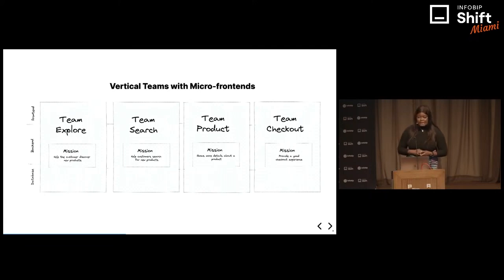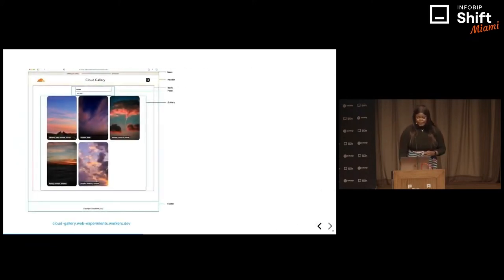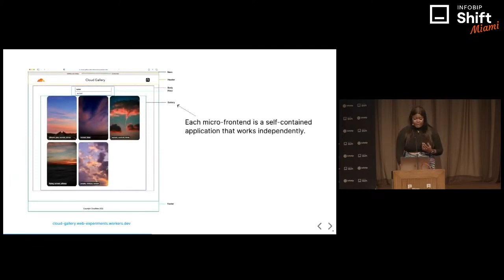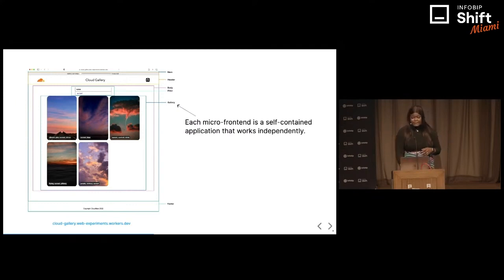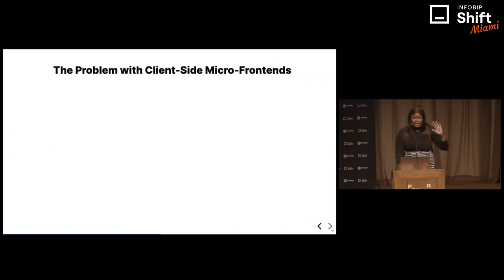Using an e-commerce app as an example, you have a team working on checkouts with a frontend, backend, and DevOps team, and the same applied to the other different types of teams. Let's take a look at an example app. This is a micro frontend application. What you see is a singular application, but it's actually split up into different components that are independent. They are deployed independently, and several components are being put together to form a single application.